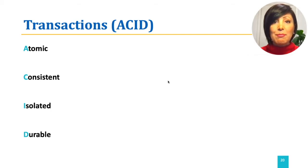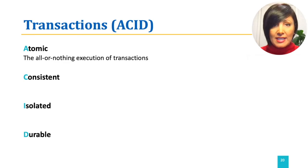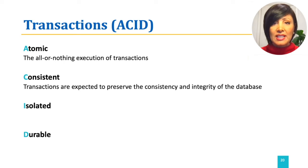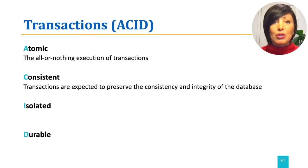Atomic means that a transaction should either execute completely or stop completely without any effect on the database. Consistent refers to the integrity and consistency of the database that should be maintained by each transaction.